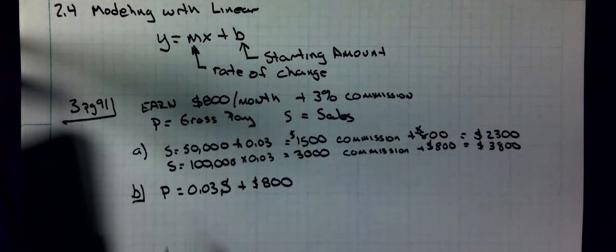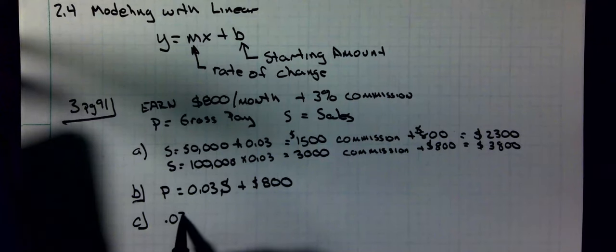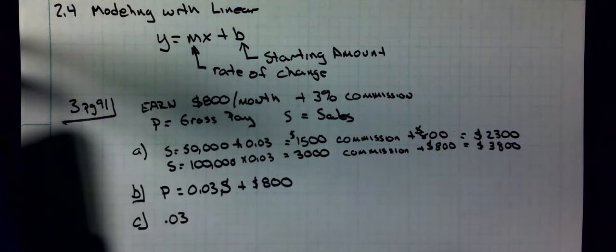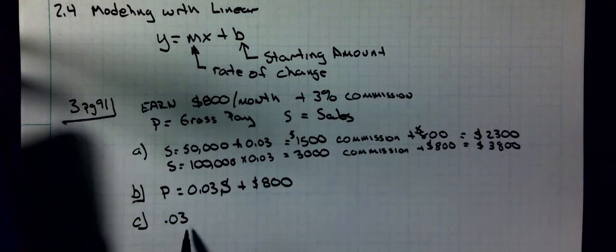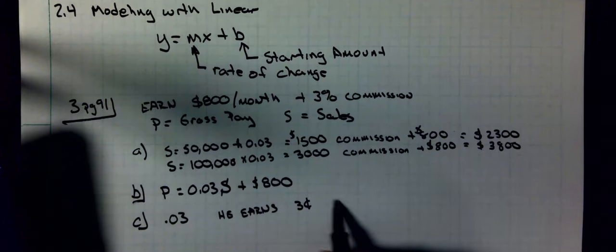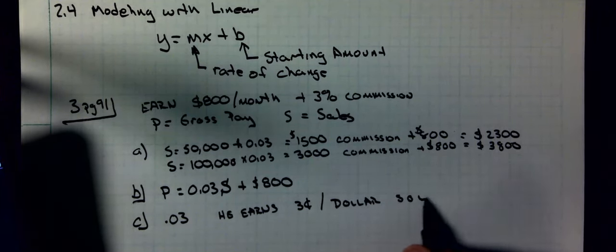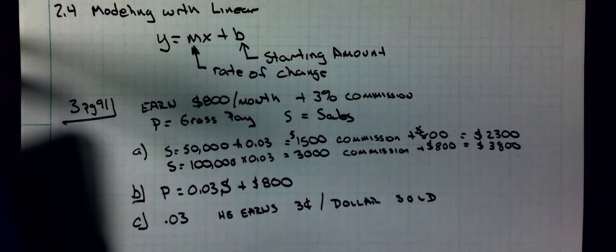What is the slope of the line? The slope is 0.03. What does it mean? What does it represent? P earns per dollar of sales.